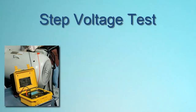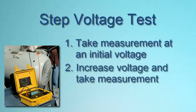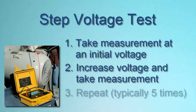A third method is the step voltage test. This involves testing at two or more test voltages and comparing the results. The test begins at an initial test voltage. At a specified interval, typically one minute, a measurement is recorded, after which the test voltage is increased. This increase is usually to five times the initial voltage. This process may be repeated through several steps, with measurements taken after one minute and the test voltage increased at a 5-to-1 ratio over the previous voltage. A common practice is to test at five voltage steps.